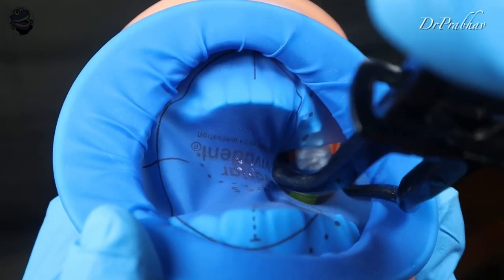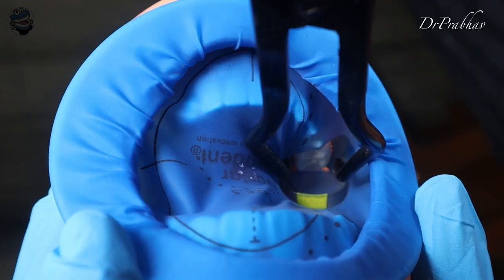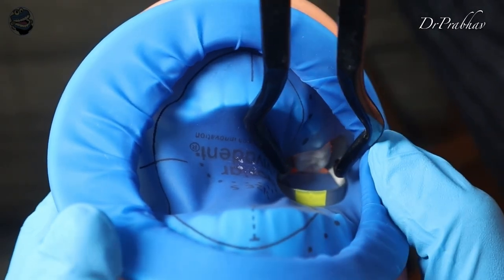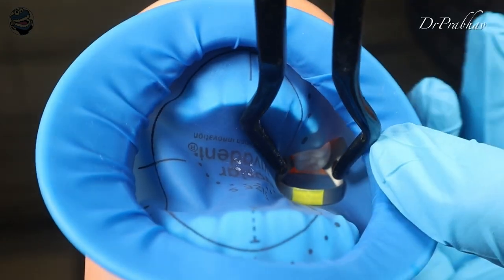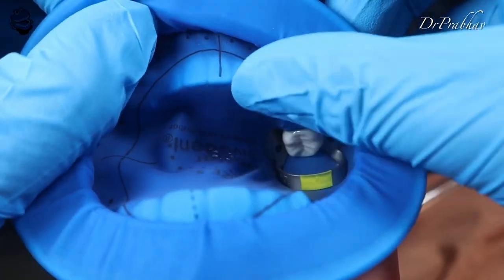This is as easy as it can be seen over here. Once we place it, engage it at a proper place on the cervical aspect of the tooth that we need to engage, we will comfortably remove it. We are done comfortably.